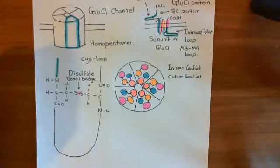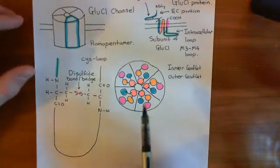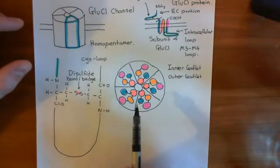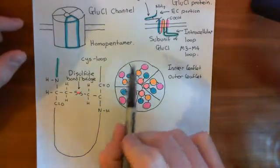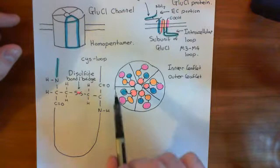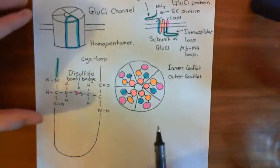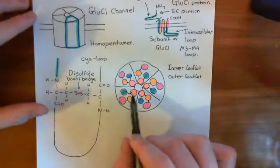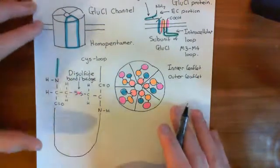Welcome to this next video in which we're discussing the GluCL channel. We're in the process of discussing the structure of the GluCL channel. We've discussed how the alpha helices are positioned relative to one another and how they form this star shape, which is the GluCL channel. We now want to study just the inner leaflet — this ring of M2 alpha helices.